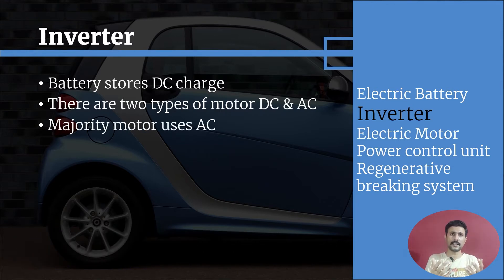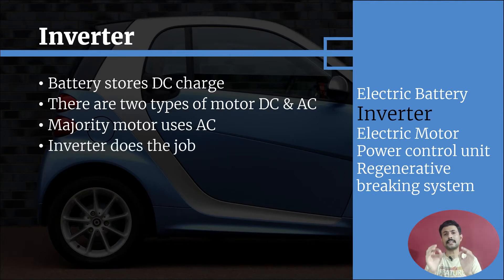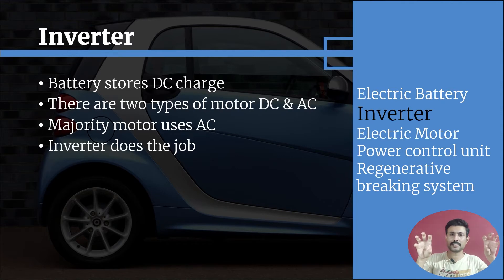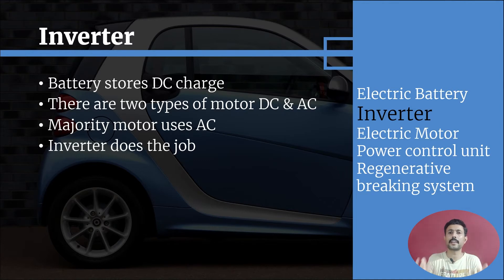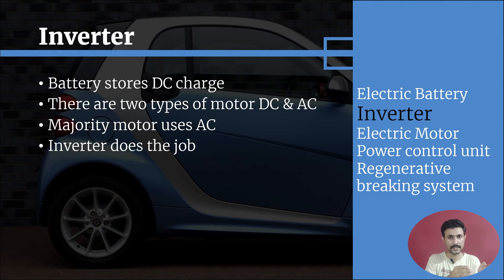In the majority of electrical vehicles, AC motors are used nowadays. AC motors require AC power to run, but the battery in our electrical vehicle stores DC. So the AC motor cannot run directly on DC. This is where the inverter does its main job — it converts DC supply to AC for the motor. It also controls the voltage magnitude and frequency to achieve the required speed and torque.